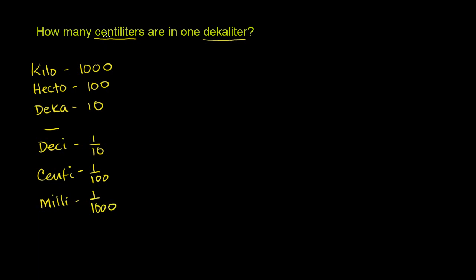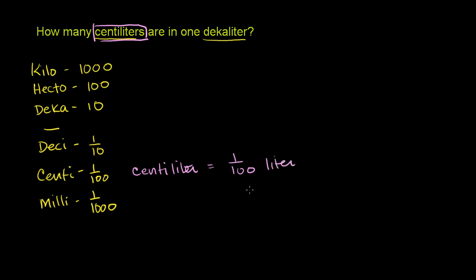So let's go back to the problem. We have centiliters — centi is right over here. A centiliter is equal to one hundredth of a liter. Or you could say 1 liter for every 100 centiliters — 1 liter per 100 centiliters.